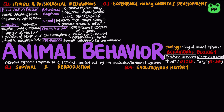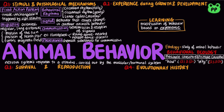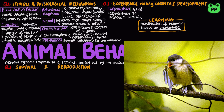Innate behavior is developmentally fixed and under strong genetic influence. Learning refers to a modification of behavior based on specific experiences, establishing specific links between experience and behavior. Habituation is a simple form of learning that involves loss of responsiveness to stimuli that convey little or no information — essentially, stop attending to a stimulus that is irrelevant. For example, birds will stop responding to alarm calls from their species if these are not followed by an actual attack.